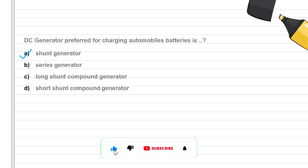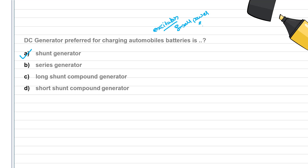We will use the shunt generator for general lighting and excitation. We will use the shunt generator for electroplating. We will use the portable generator — that is for small power supply. We will also use the series generator.